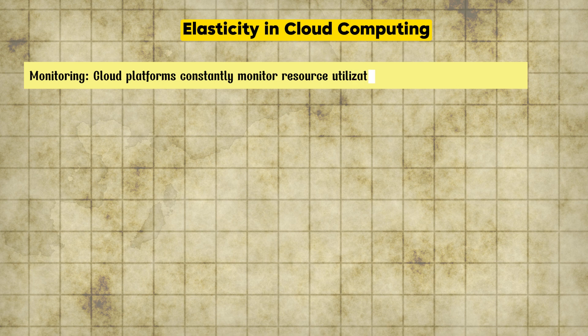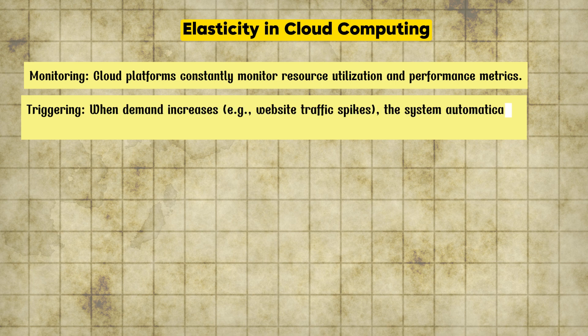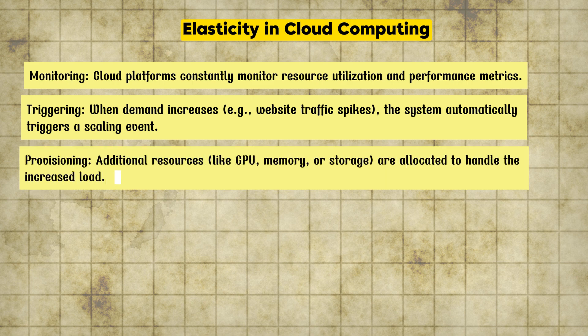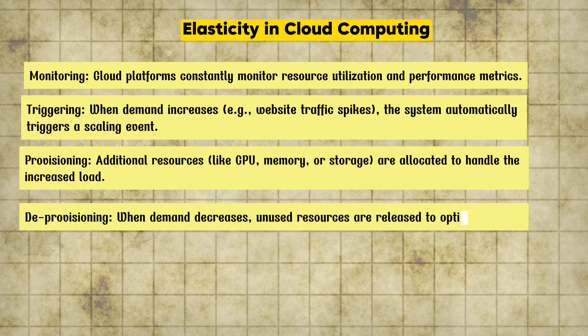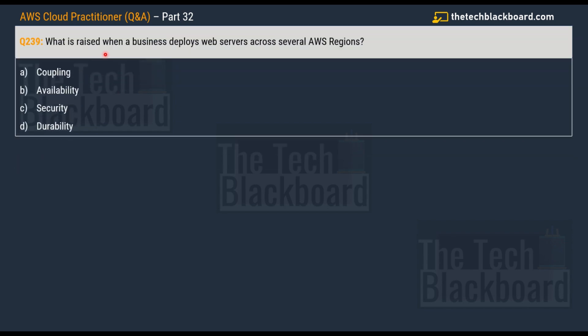Here's how these characteristics work together: First, monitoring — cloud platforms constantly monitor resource utilization and performance metrics. Then triggering — when demand increases, the system automatically triggers a scaling event. Then provisioning — additional resources are allocated to handle increased workloads. Finally, deprovisioning — when demand decreases, unused resources are released to optimize cost. I hope you now understand elasticity, its benefits, and its characteristics.